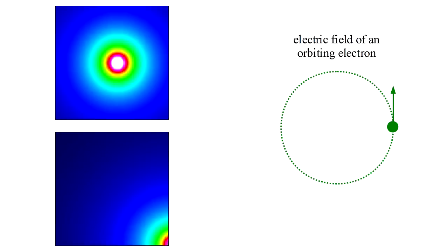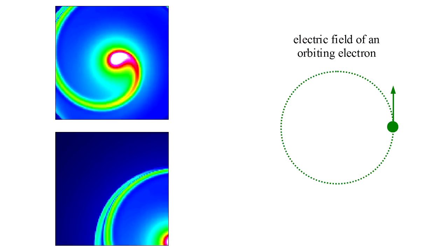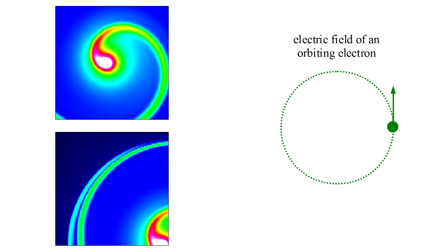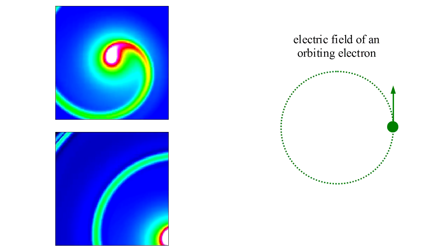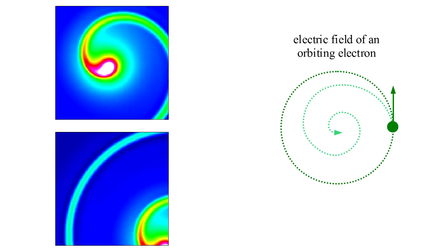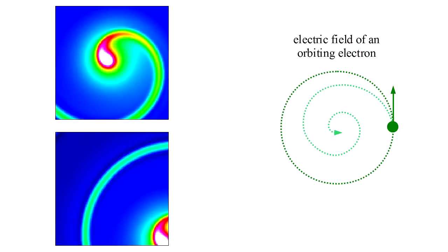Here we show two views of an electron's electric field. It starts at rest and then we move it along a circular orbit. As it orbits, its electric field spirals outward, carrying away energy as electromagnetic radiation. This leaves the electron with less and less energy, with the result that its orbit spirals into the nucleus. The atom will rapidly collapse.